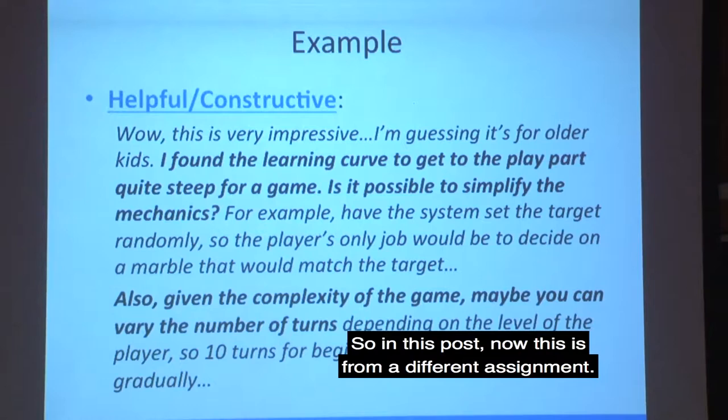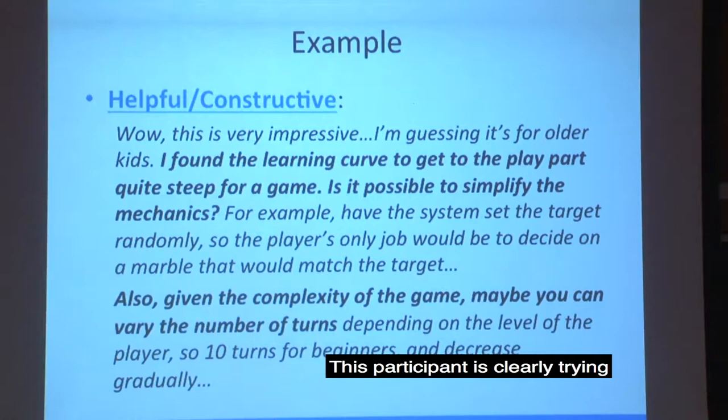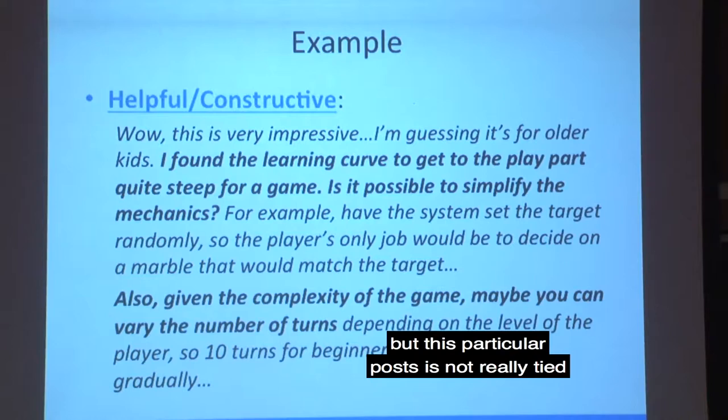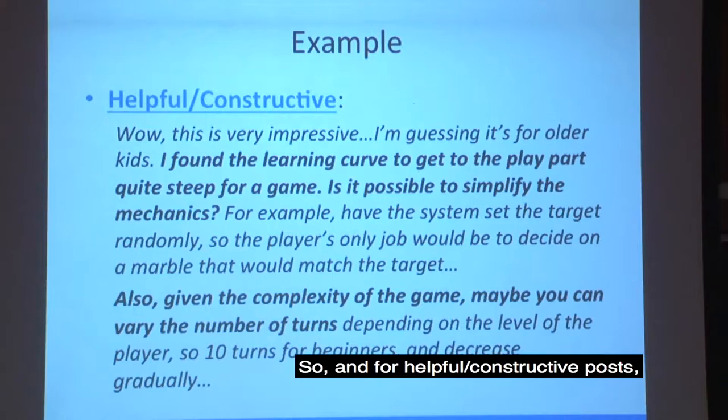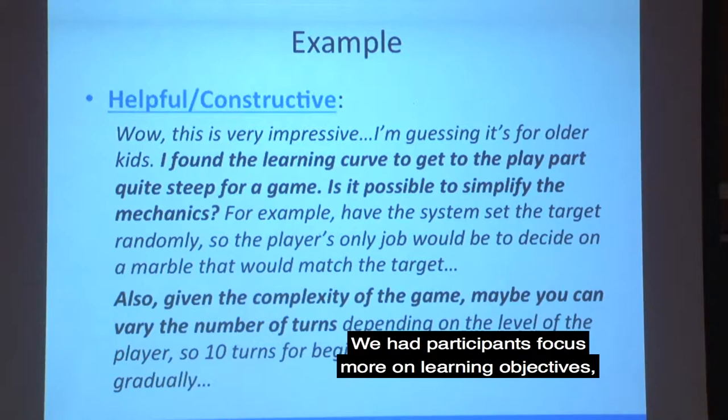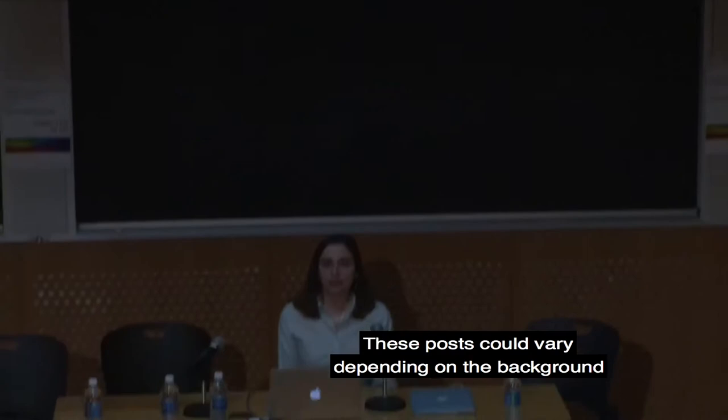The next one is helpful constructive. In this post — from a different assignment — the participant is clearly trying to help the other participant improve their game, but this particular post is not tied to any prompt we gave them. For helpful constructive posts, there were definitely different kinds: some participants focused more on learning objectives or classroom applications, others on technical issues and mechanics. These posts could vary depending on the background of the participant commenting.